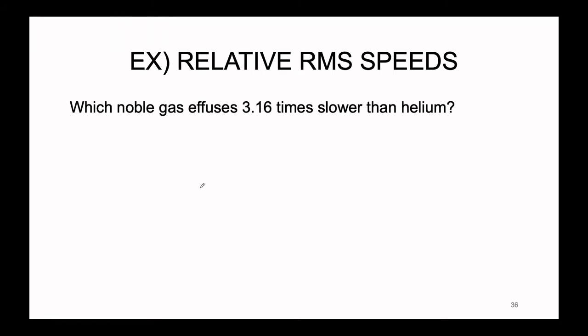Let's determine which noble gas effuses 3.16 times slower than helium. Even without calculating, we can assume this noble gas will have a greater molecular weight than helium — if it is moving more slowly, it must be bigger, because it would take more inertia to get it to go any faster. Take a moment to work on this, and we will come back together to determine which noble gas is moving slower than helium.